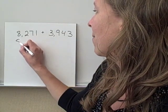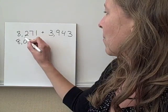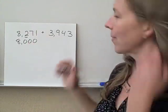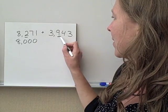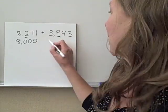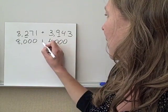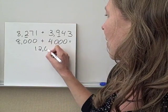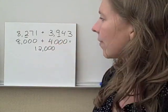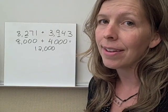So we're rounding now just to compare with front-end estimating. All right, so that would become 8,000, right? Because it's two is in the hundreds place and that's less than five. With this one, we have a nine in the hundreds place. So we round up to 4,000. We add these two together and we get 12,000.